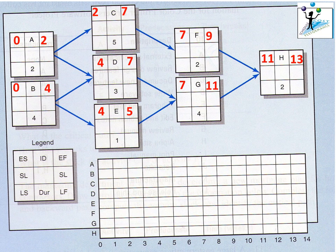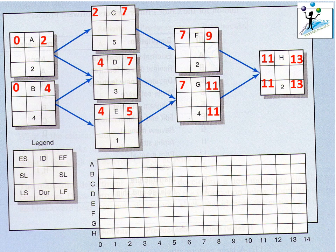The early finish time for the last activity becomes the late finish time for the last activity, so we copy thirteen as the late finish time. During the backward pass we subtract durations. The late start time for Activity H is thirteen minus two, which is eleven weeks.